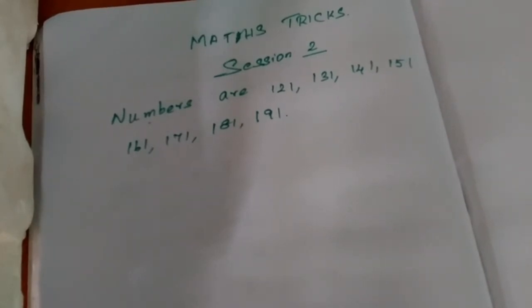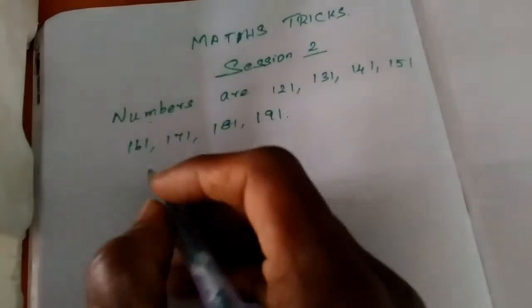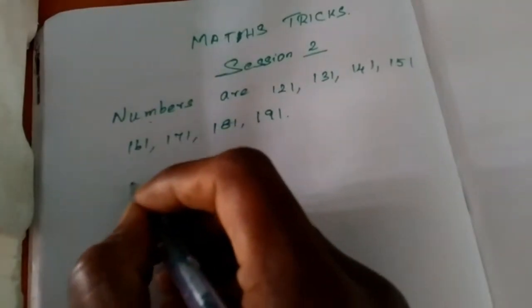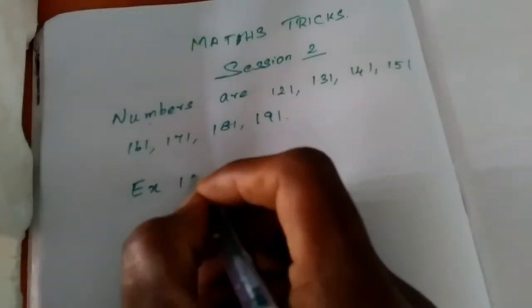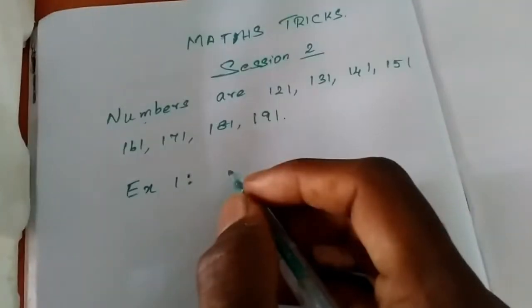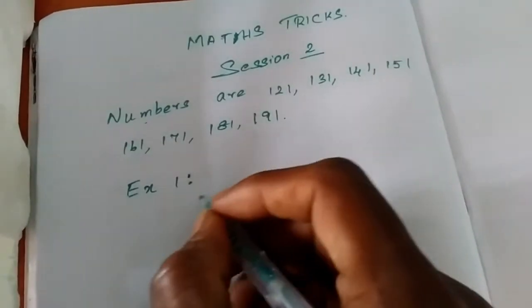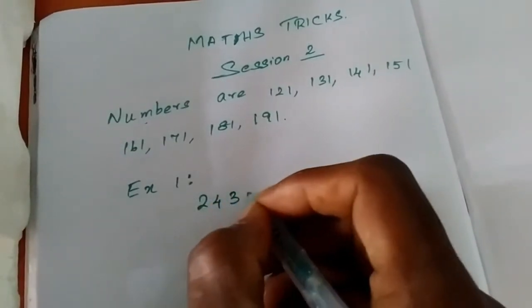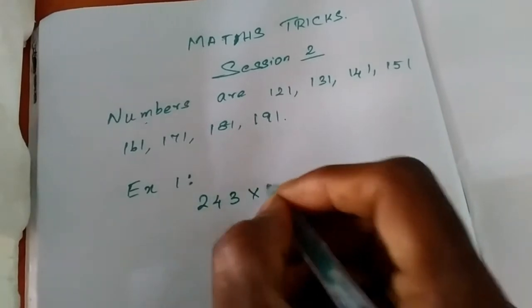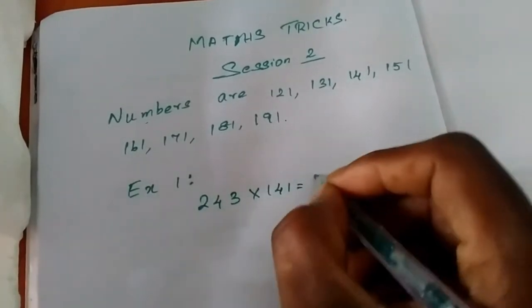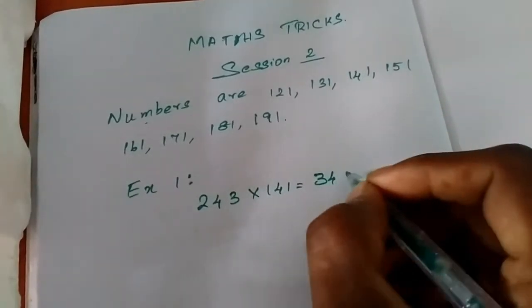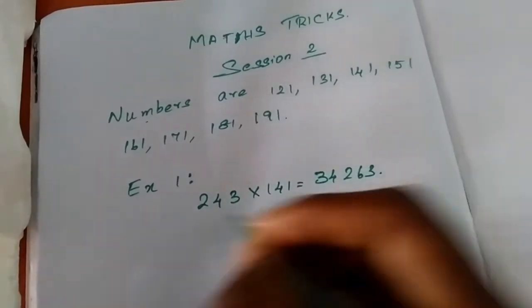First example: 243 into 141. The answer is 34263.